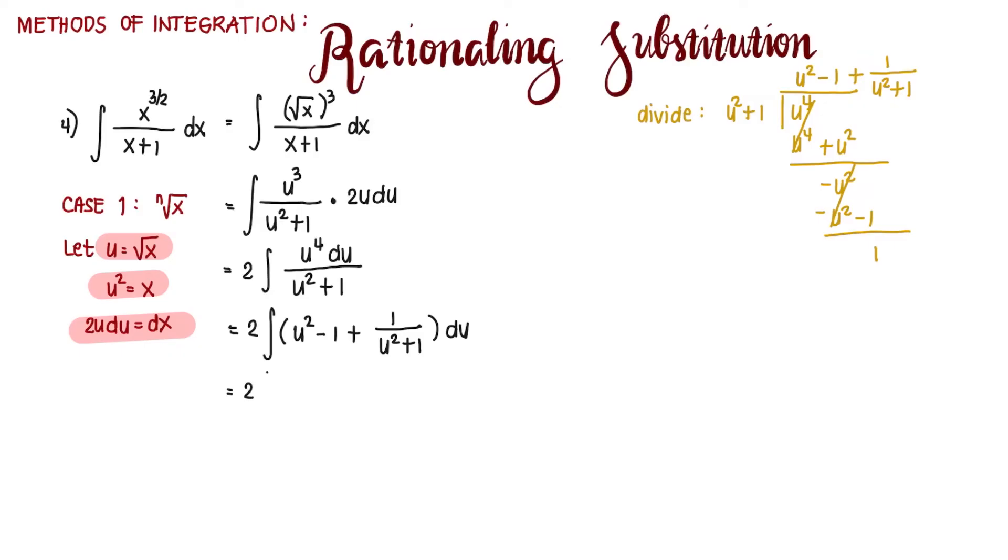Integrating, that's 2 times the quantity of u cubed over 3 minus u plus the pattern 1 over u squared plus 1 is that leading to an inverse trigonometric function that's arctangent of u plus c.